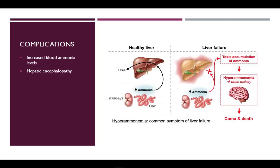The final complication is increased blood ammonia. Ammonia is a byproduct of protein metabolism. The liver converts ammonia to urea so it can be excreted by the body. As liver function declines and the ability to remove ammonia diminishes, ammonia builds up in the blood.